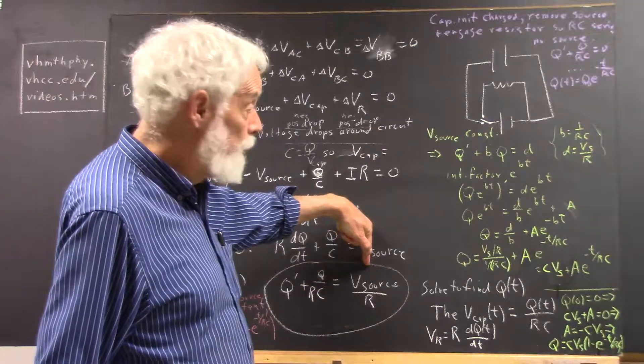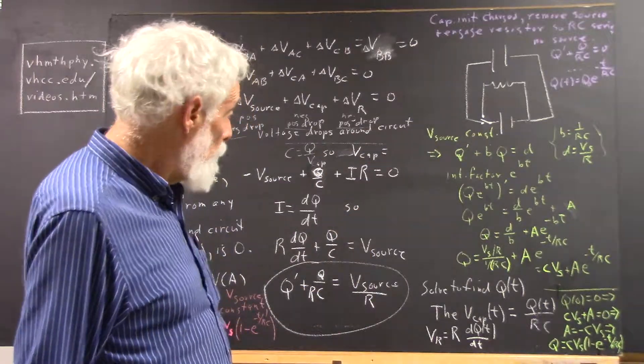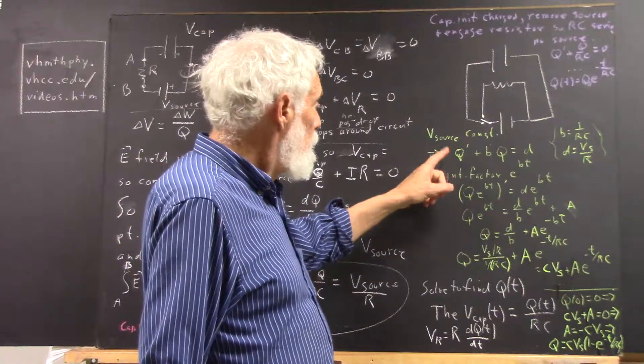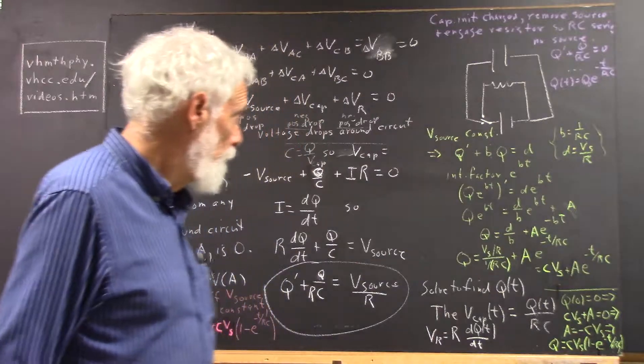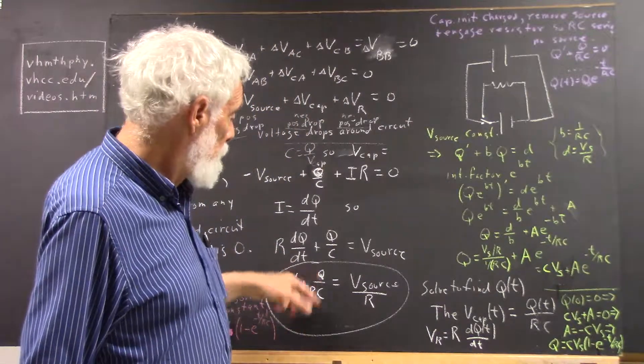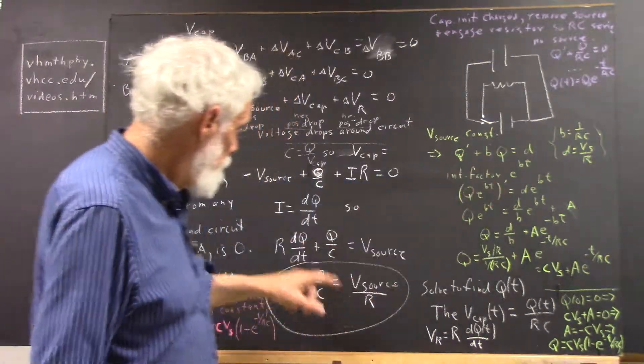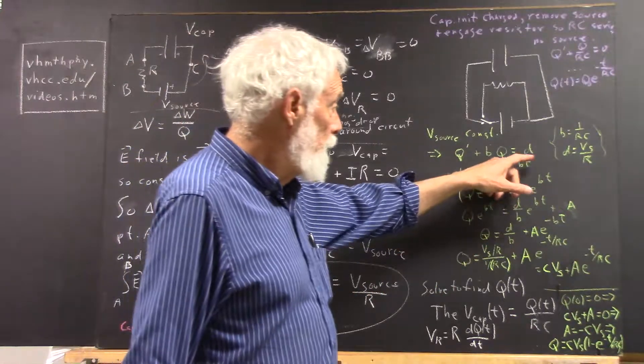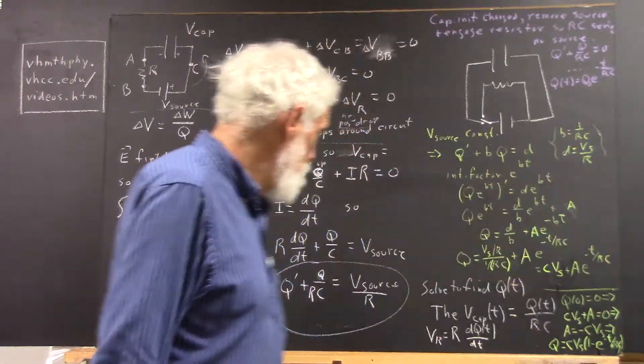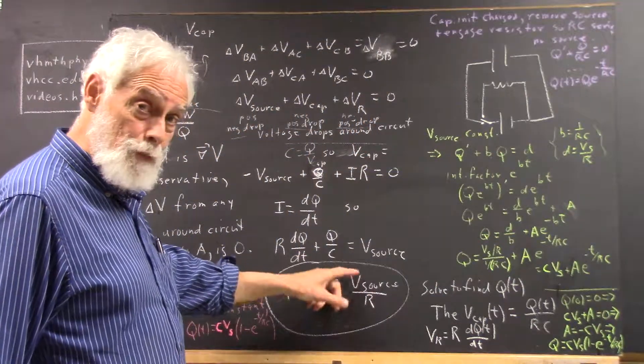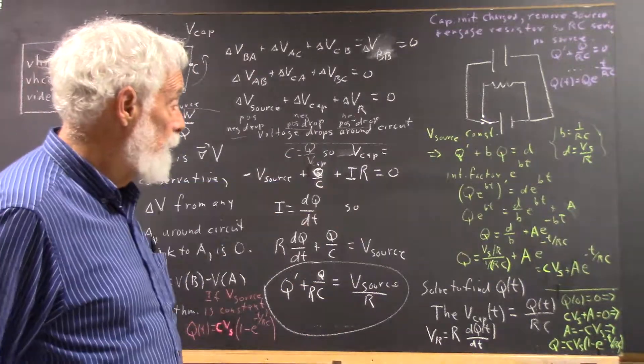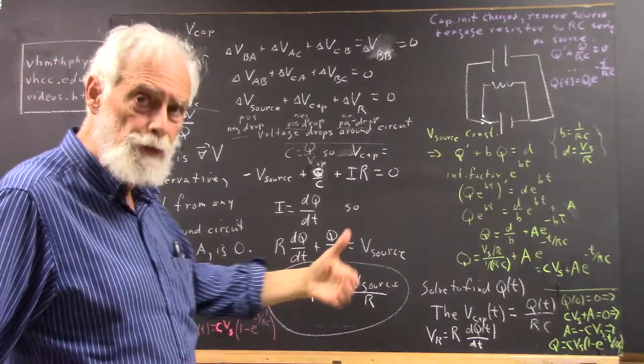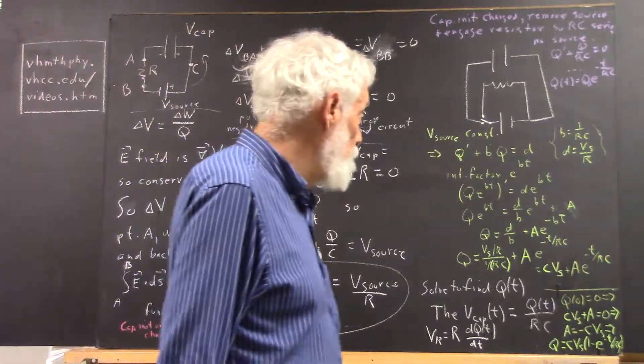This equation, in the case where the source voltage is constant, becomes an equation of the form q' + bq = d, where b is the reciprocal of RC, so that bq is q over RC, and d is source voltage over R, the right-hand side. Those are all constant if the source voltage is constant, and the resistance is not changing in time.